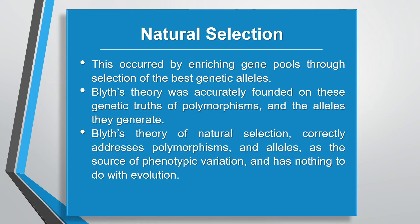This occurred by enriching gene pools through selection of the best genetic alleles — terms and concepts that would become understood later after the field of genetics was originated and advanced. Furthermore, the theory of natural selection that Edward Blythe formed 24 years earlier than Darwin's was accurately founded on the genetic truths of polymorphisms and the alleles they generate. Blythe's theory correctly addresses polymorphisms and alleles as the source of phenotypic variation and has nothing to do with evolution. Darwin's theory of evolution was nothing new either — the philosophical belief in evolution had been around for a long time prior to Darwin.